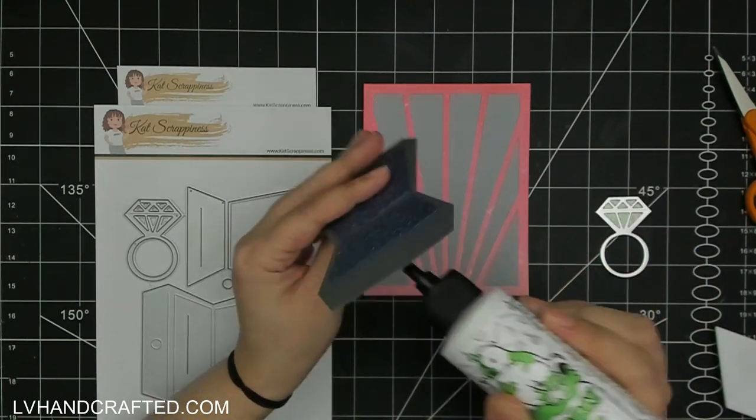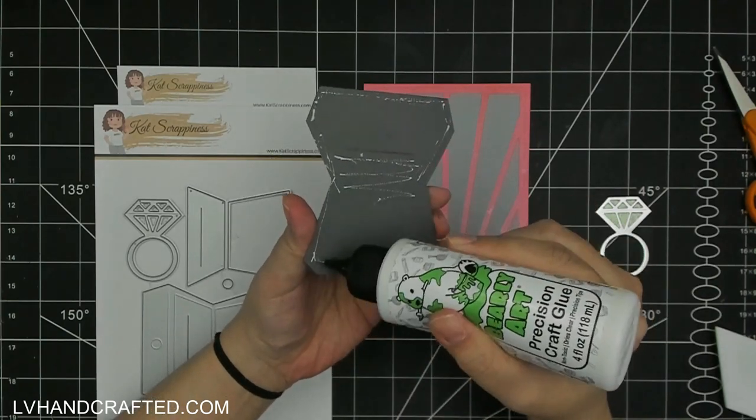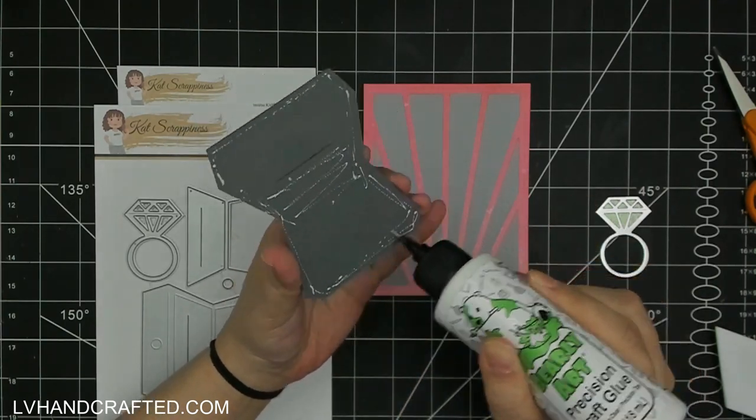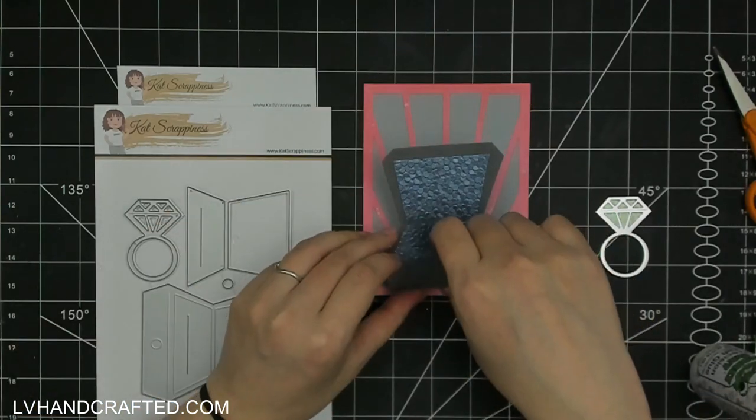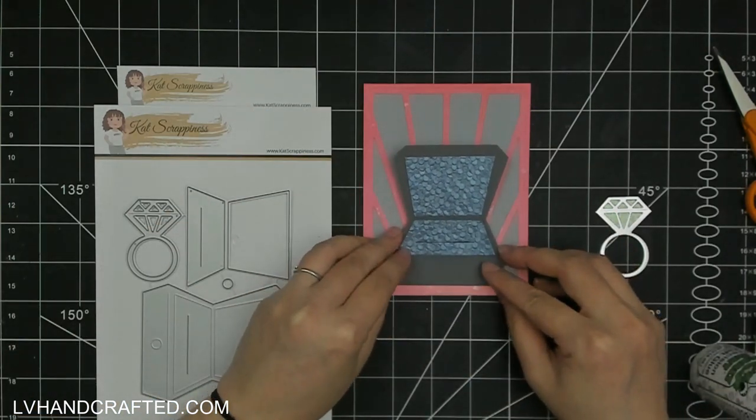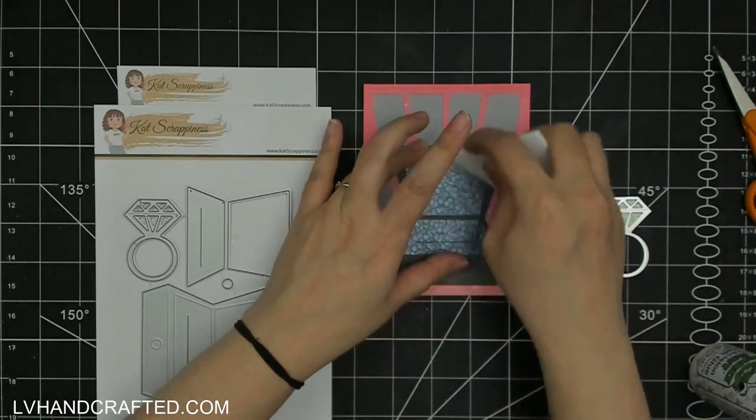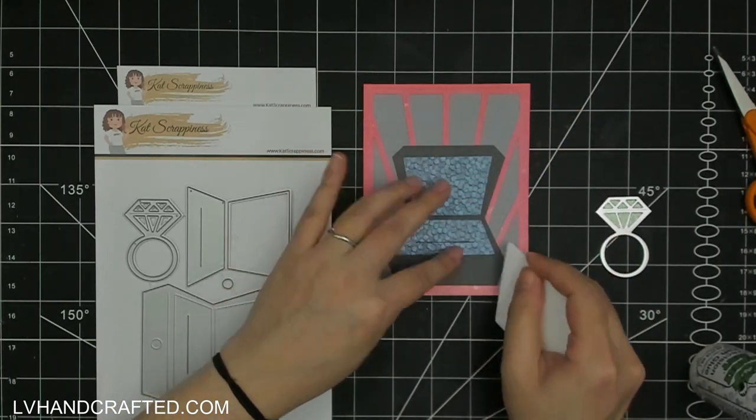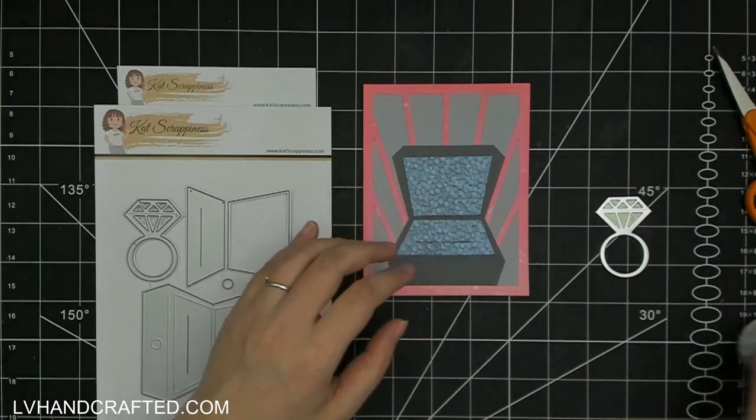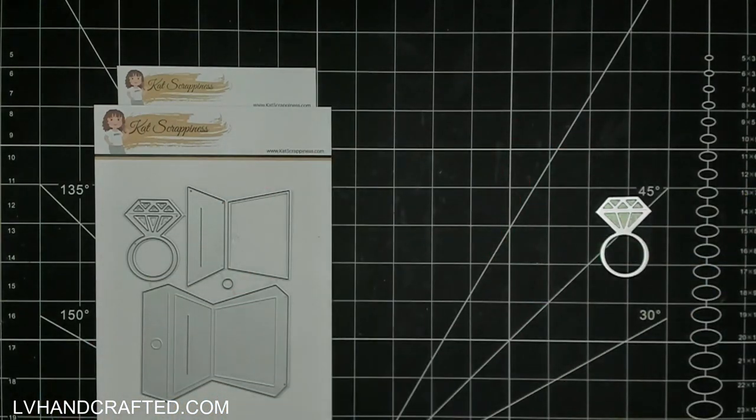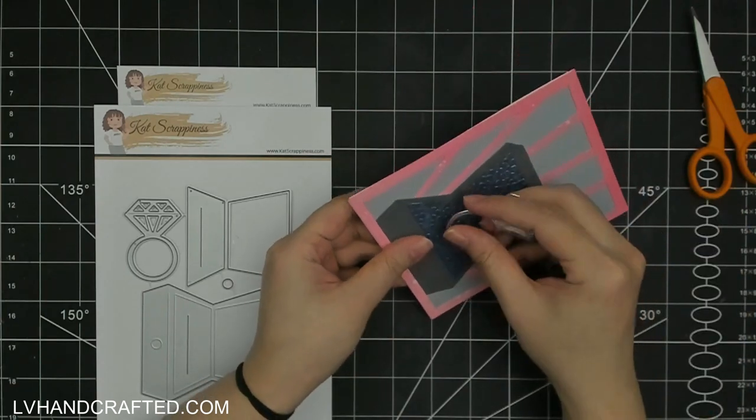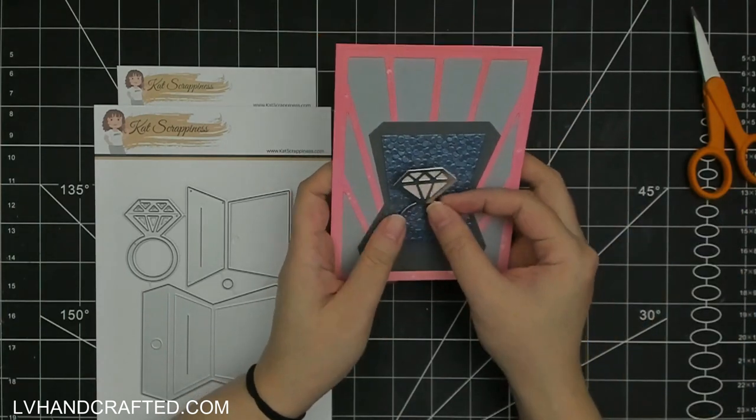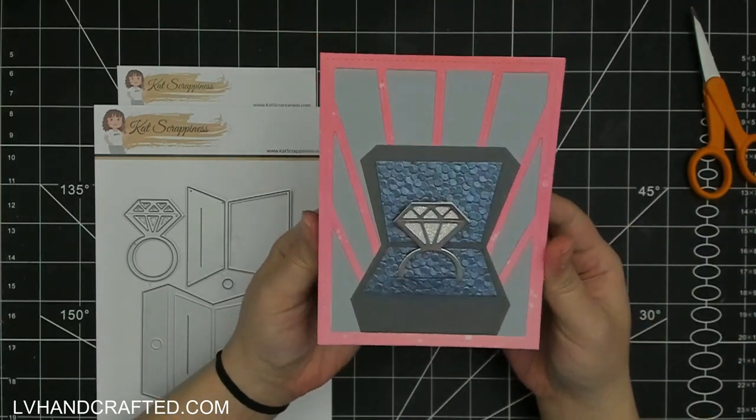If you do plan to do that, then you want to make sure that you don't put glue below that slit so that the ring can still slide in behind that. So just be careful as you're attaching the box that you leave some portion of the box unglued behind there. And then you can just slip your ring right in, which I think is adorable.